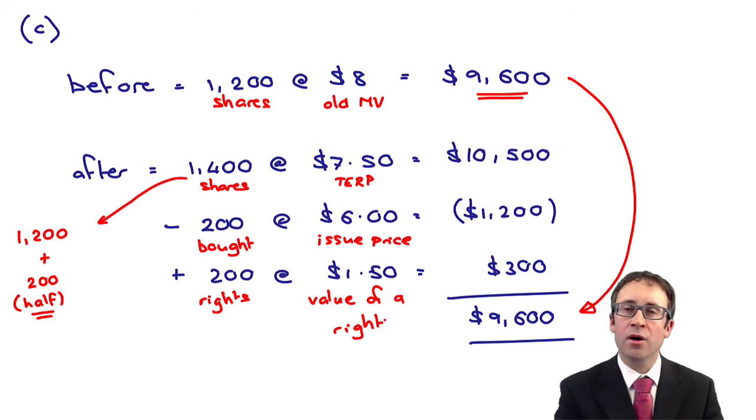And then what we have there, the $1.50 is the value of a right. So 200 times by the 1.5 gives me 300. And if you go through, 10,500 less 1,200 plus 300 gives me the $9,600. So that goes through there and demonstrates that even if you do half and half, 75-25, you make up any percentage that you so wish, you still end up with there being no change in shareholder's wealth under this rights issue.